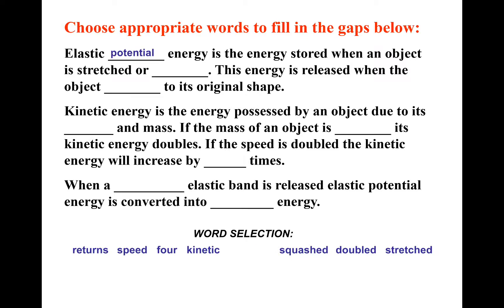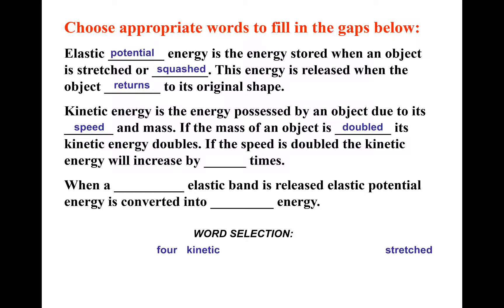Elastic potential energy is the energy stored when an object is stretched or squashed; this energy is released when the object returns to its original shape. Kinetic energy is the energy possessed by an object due to its speed and mass. If the mass of the object is doubled, the kinetic energy doubles. If the speed is doubled, the kinetic energy increases by 4 times. When a stretched elastic band is released, elastic potential energy is converted into kinetic energy.